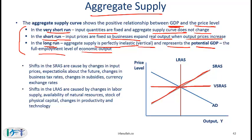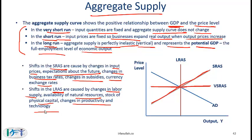Shifts in short run aggregate supply are caused by changes in input prices, expectations about the future, changes in business tax rates, changes in subsidies, or changes in exchange rates. Shifts in long run aggregate supply are caused by changes in labor supply (more people working shifts it), availability of natural resources (e.g., new oil and gas reserves increase output), stock of physical capital (if physical capital increases, productivity increases and potential GDP increases), and changes in productivity and technology.